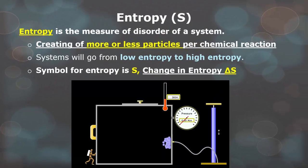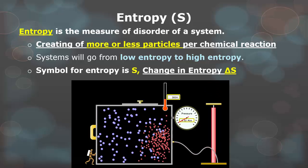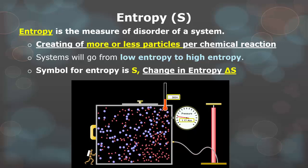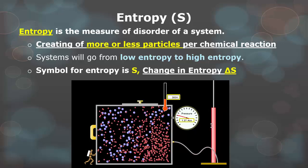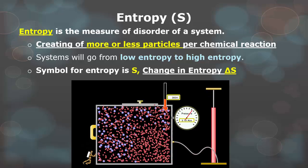Entropy is the measure of disorder of a system, which means creating of more or less particles per chemical reaction. Systems will go from low entropy to high entropy. Symbol for entropy is S, and the change of entropy is delta S. You're going to need these for future lessons.